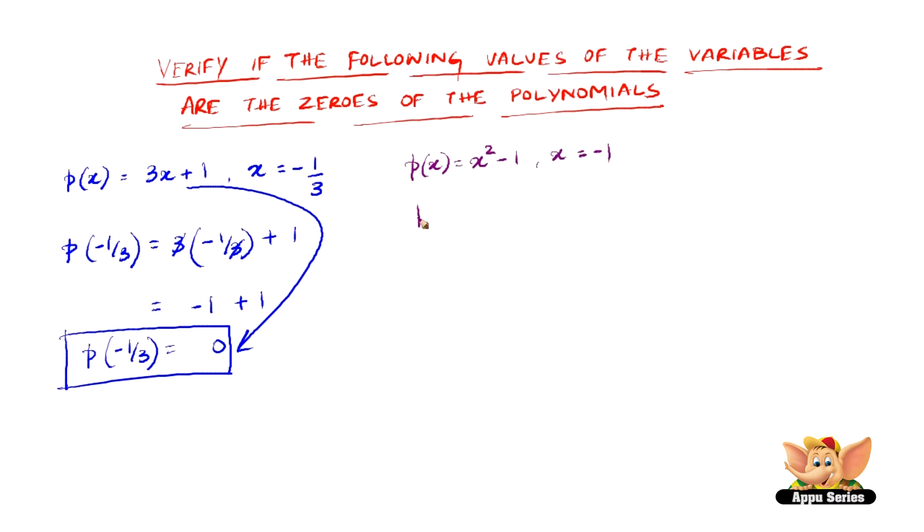So let us try this. All we have to do is substitute minus 1 in the place of x and we get minus 1 the whole squared minus 1. So minus 1 the whole squared is plus 1 minus 1. So minus 1 plus 1 is 0, or 1 minus 1 is simply 0.